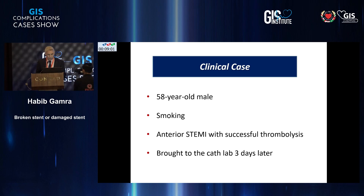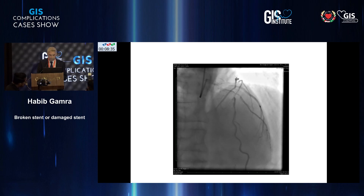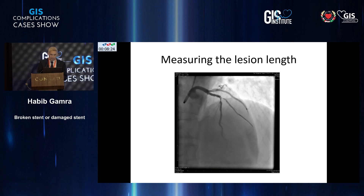This is a 58-year-old male patient who is a smoker, who had an anterior STEMI with successful thrombolysis, and was brought to the cath lab three days later. This is the angiogram, as you can see: tight lesion of the LAD bifurcation with the diagonal. It was planned to have a bifurcation plan, meaning two wires — the main LAD and diagonal — then kissing balloon and assessing the results afterwards.